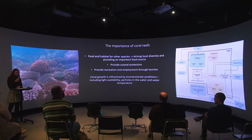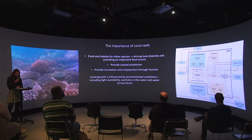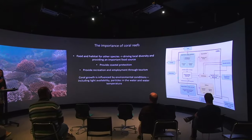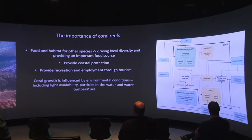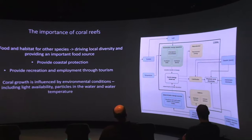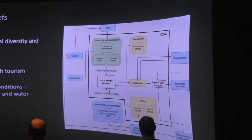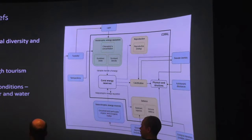Corals obtain energy through autotrophic sources — that's a transfer of energy from their photosynthetic symbiotic algae — and heterotrophic sources, through uptake or capture of dissolved and particulate organic matter from the water column. These energy sources are influenced by environmental conditions including turbidity, which influences the light available for photosynthesis, as well as suspended sediment concentrations and water temperature. That energy is then used by the coral for things like growth, reproduction, immune defence and response to environmental change. By tracking coral growth over time as growth rate, we can use this as an important indicator of coral reef health and productivity.